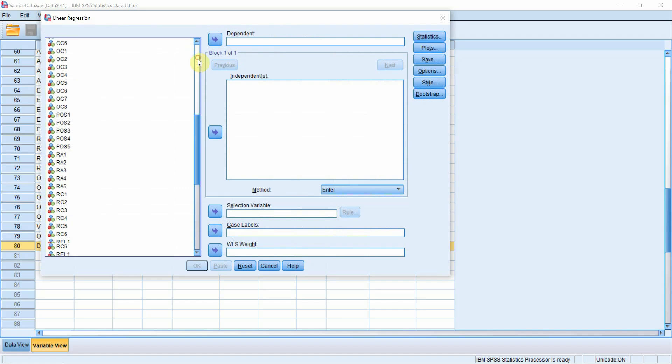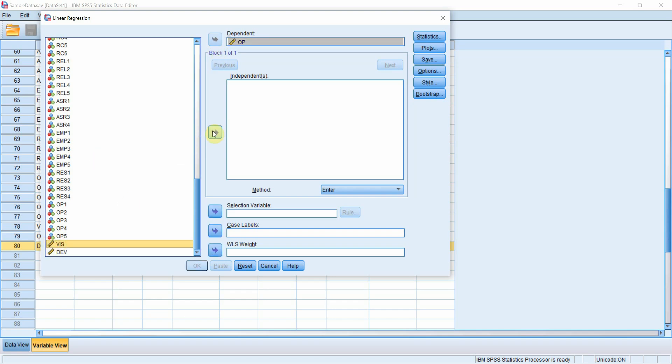Let's put in my dependent variable that is being influenced by these two other variables. Vision is my independent variable, so is my development variable. Method enter - there are other methods as well which we are going to look in detail in coming sessions.